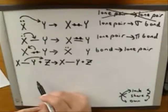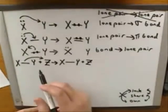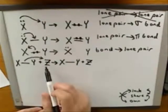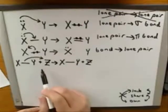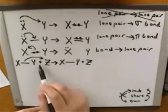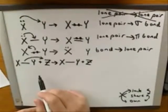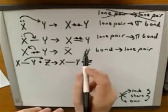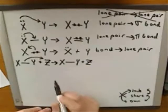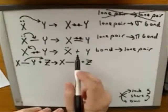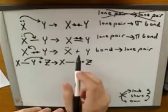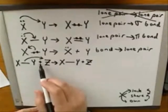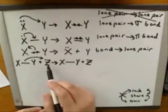Let's try to interpret this electron-pushing arrow. Notice here that we're thinking as if we have two separate molecules — one molecule with X and Y, and another molecule with atom Z. This plus sign indicates that these are two separate things. The plus sign is not indicating a positive charge; it just means we've got one molecule with X and Y and another molecule with Z.